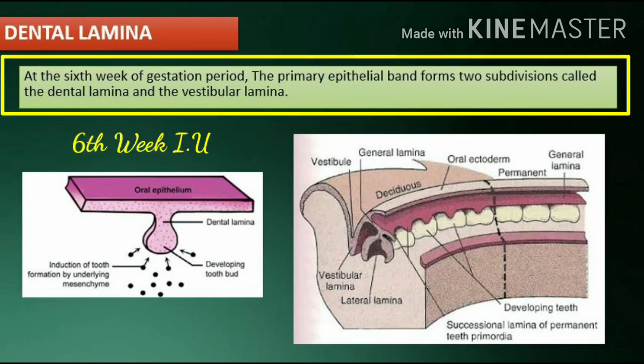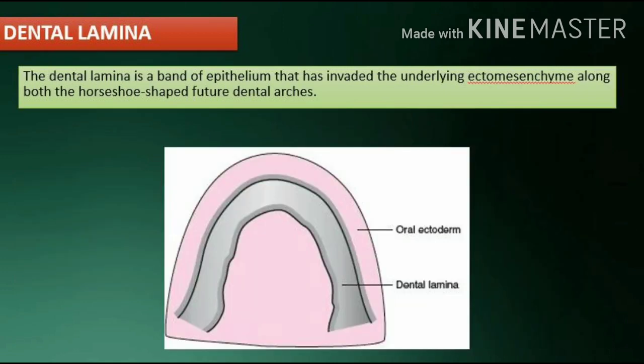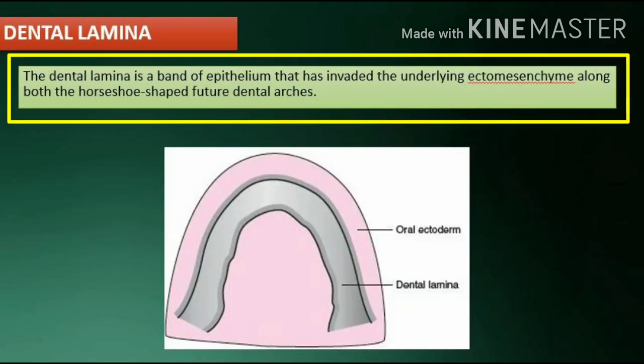Dental lamina: At the sixth week of gestation, the primary epithelial band forms two subdivisions called the dental lamina and the vestibular lamina. The dental lamina is a band of epithelium that has invaded the underlying ectomesenchyme along both the horseshoe-shaped future dental arches.